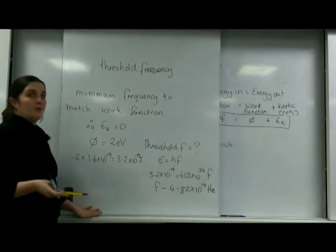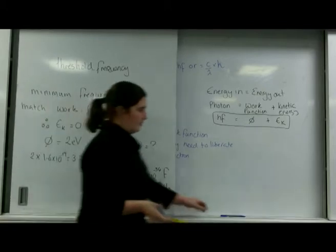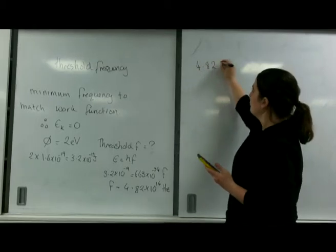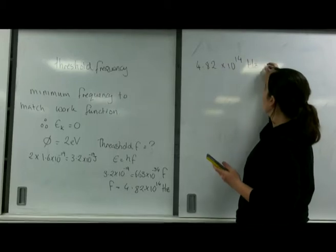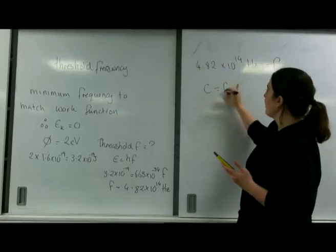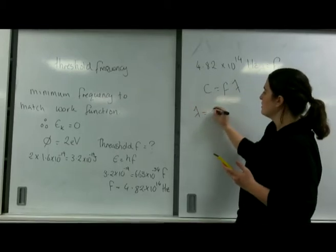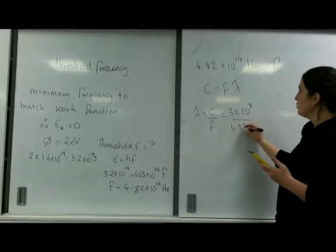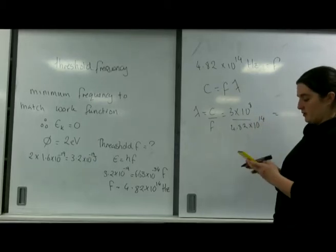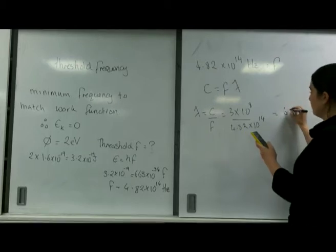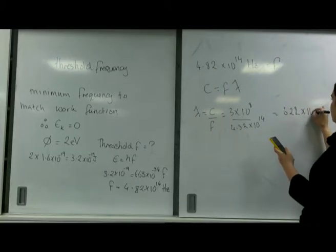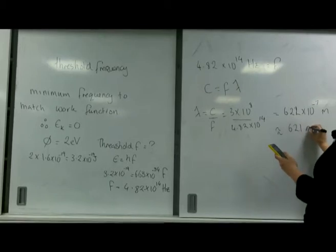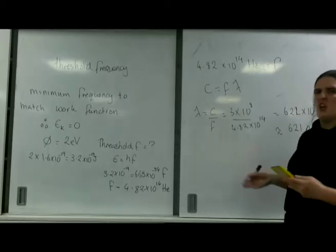And with that information, I can even work out its wavelength. 4.82 times 10 to the 14 Hertz is my frequency. C equals F lambda. Lambda is C over F. So that's 3 times 10 to the 8 over 4.82 times 10 to the 14. That's 6.62 times 10 to the minus 7 meters, which is 621 nanometers, which is putting it sort of in the yellowish boundary.